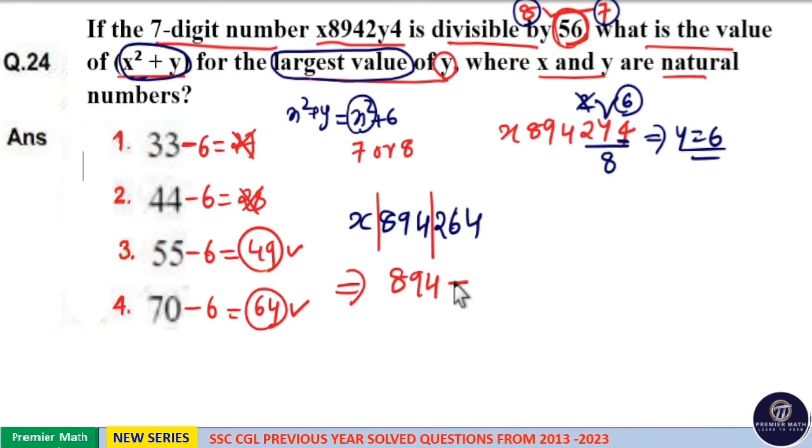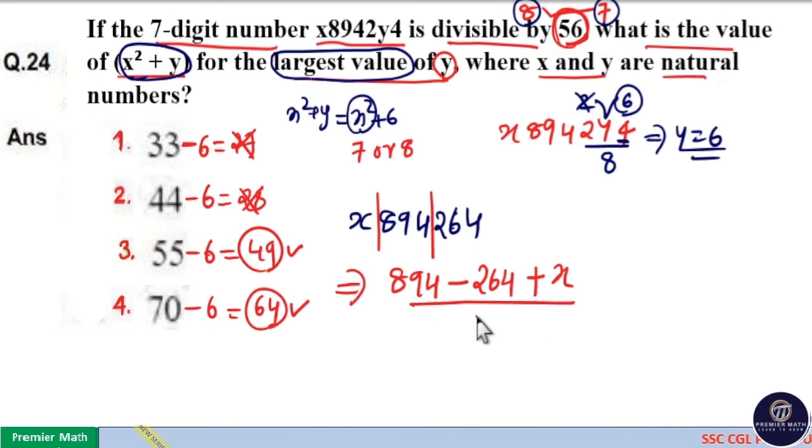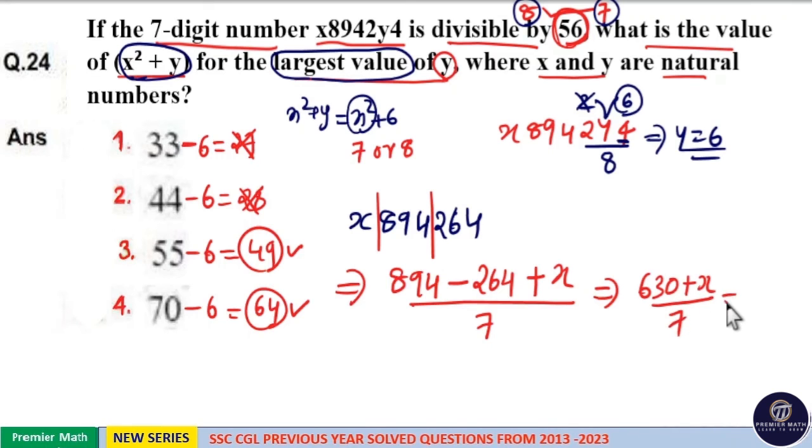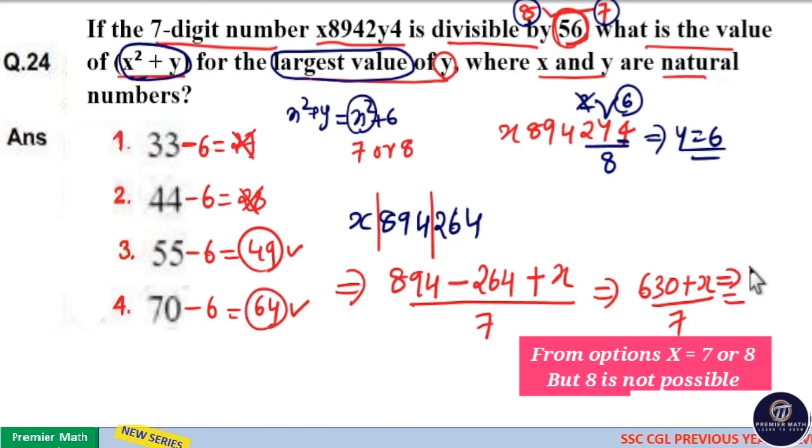If this number is divisible by 7, then 894 minus 264 plus x should be divisible by 7. Here 894 minus 264 is 630. 630 plus x should be divisible by 7. Since 630 is completely divisible by 7, x equals 7.